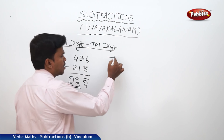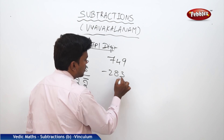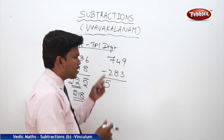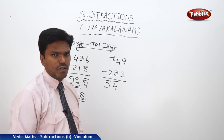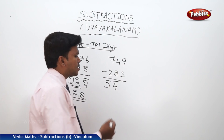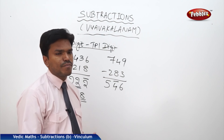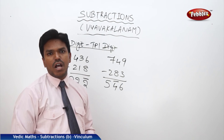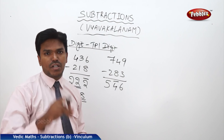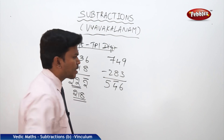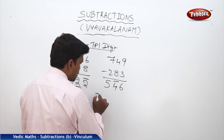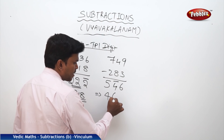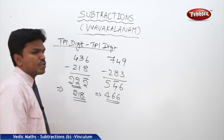Example: 749 minus 283. 7 minus 2 equals 5. 4 minus 8 not possible, so reverse: 8 minus 4 equals 4 bar. 9 minus 3 equals 6 directly. We have 5, 4 bar, 6. Reduce 5 by 1 to get 4, complement of 4 is 6, drop 6 as it is. Answer: 466.